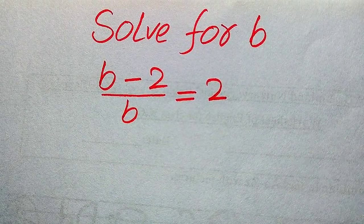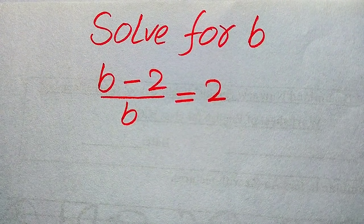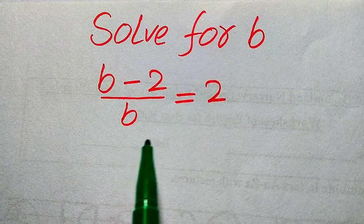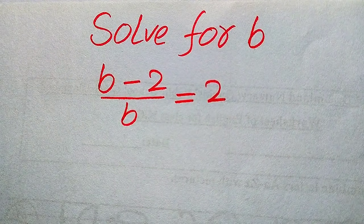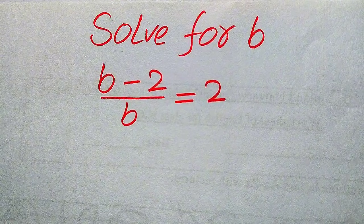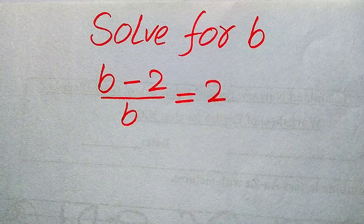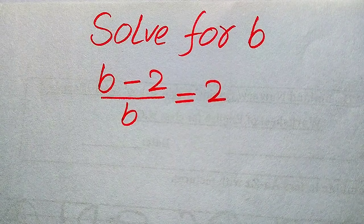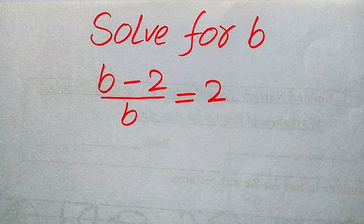Hello everyone. How to solve this problem for the values of b, if we have b minus 2 divided by b equals 2, and we solve this problem for all the values of b. First we need to find all the roots of this equation, and at the last we will verify which of the roots are solutions of this equation and which are extraneous roots.